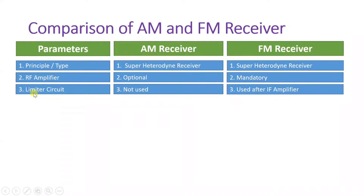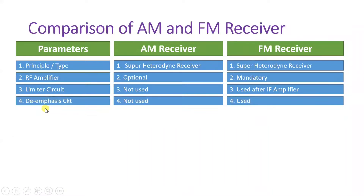When we talk about the limiter circuit, it is not used in an AM receiver, while it is used after the IF amplifier in an FM receiver. This is used along with the automatic gain control circuit. The de-emphasis circuit is also not used in an AM receiver but is used in an FM receiver.